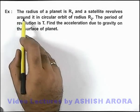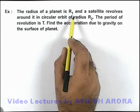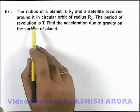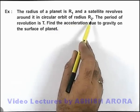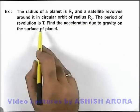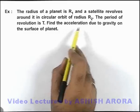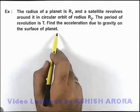In this example we are given that the radius of a planet is R₁, and a satellite revolves around it in circular orbit of radius R₂. The period of revolution is T and we are required to find the acceleration due to gravity on the surface of planet.